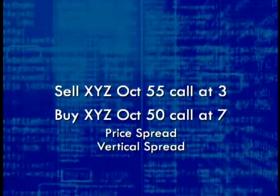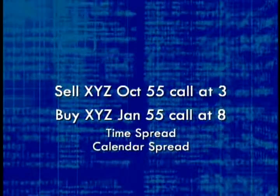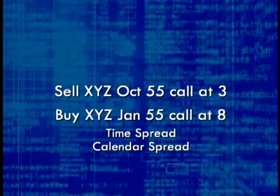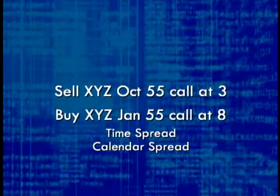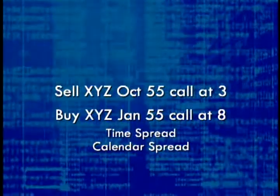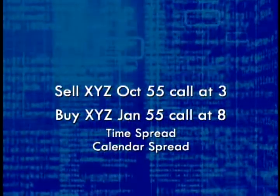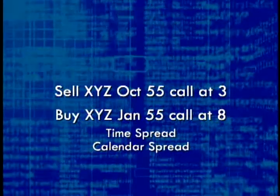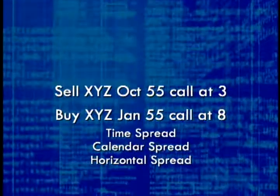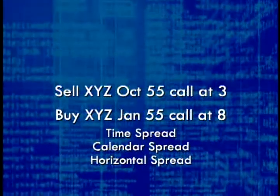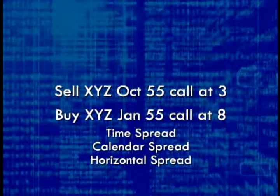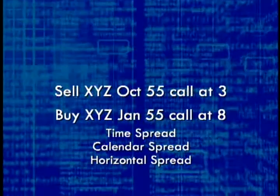Here's a slightly different type of call spread where the strike prices are the same but the expiration dates are different. If the dates are different, we call it a time spread. Another name for this is a calendar spread, and a third name is a horizontal spread — any of these three terms could be used to refer to this type of pairing where the dates are different but the strike prices are the same.